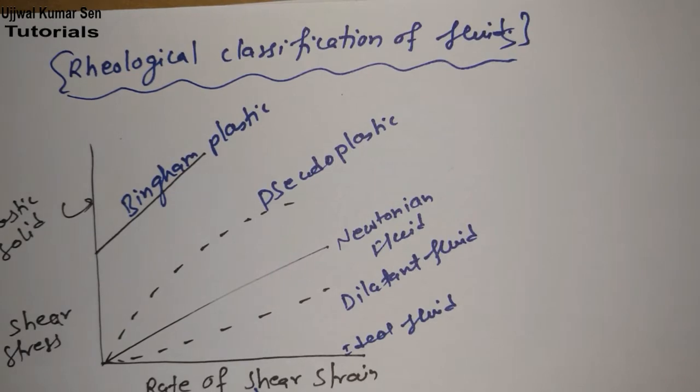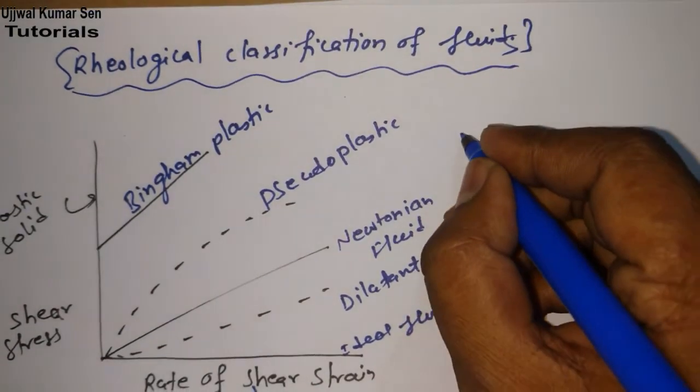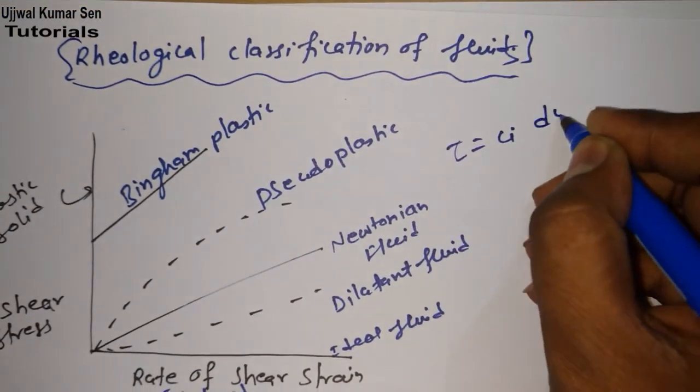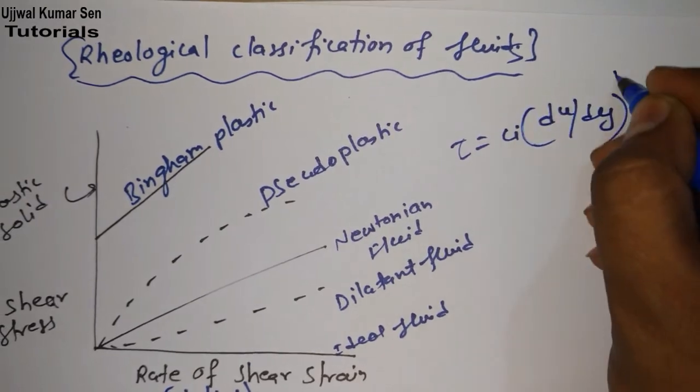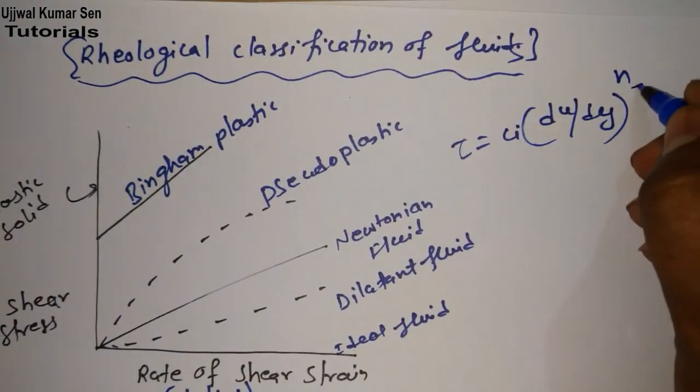If you remember, I have already shared with you the relation between tau and du/dy. In case of non-Newtonian fluid, it is tau = ci(du/dy)^n, where n is the flow index and ci is the consistency index.